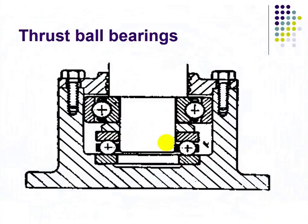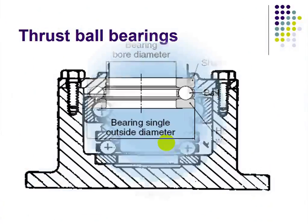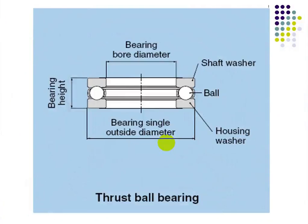The thrust ball bearing is used for thrust loads. The balls are present and load is applied in the axial direction — as shown in the figure of the thrust ball bearing.